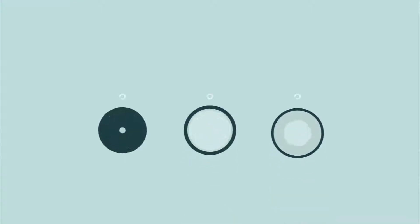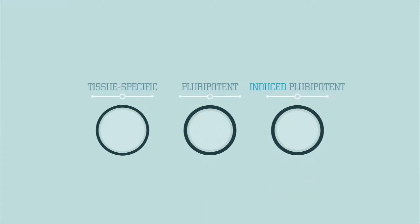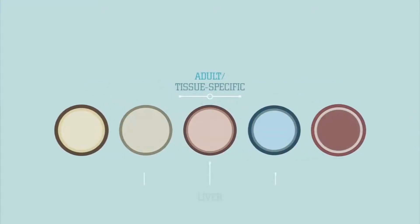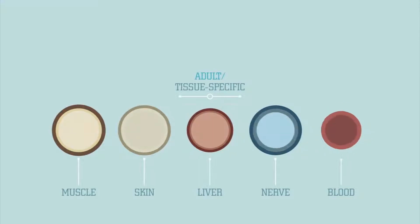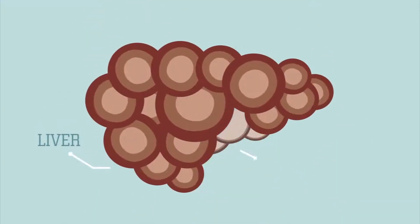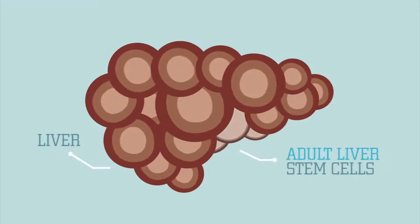There are actually multiple kinds of stem cells that scientists can use for medical treatments and research. Adult stem cells or tissue-specific stem cells are found in small numbers in most of your body's tissues. Tissue-specific stem cells replace the existing cells in your organs as they wear out and die.